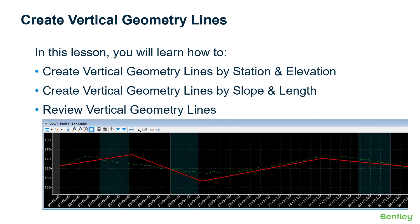In the previous lesson, we learned how to define the profile model and display the existing ground profile. In this lesson, we're going to begin designing the vertical geometry elements for the London Road vertical alignment. We're going to learn how to create vertical geometry lines by station and elevation, by slope and length, and how to review them.